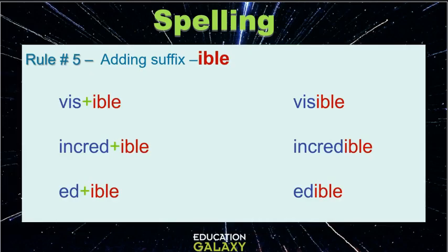Adding the suffix IBLE. IBLE is usually used when the root word is not a word, such as vis, incred, and ed. We add the suffix IBLE to make a new word. Visible. Incredible. Edible.